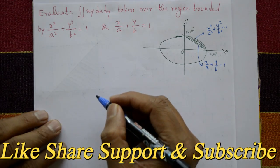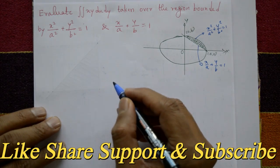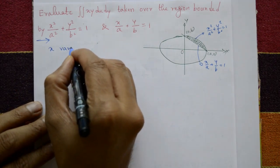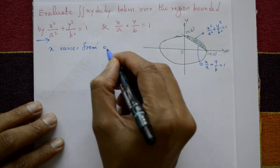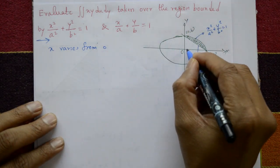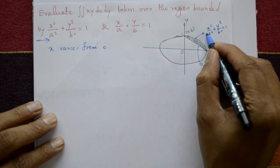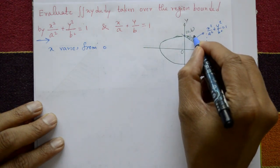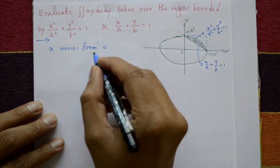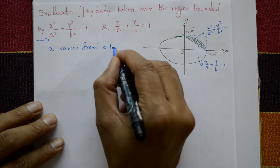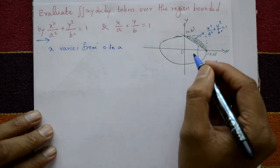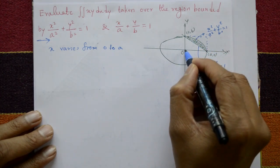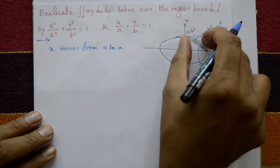For the solution, x varies from left curve to right curve, always parallel to the y-axis, and y varies from 0 to a, always parallel to the x-axis.